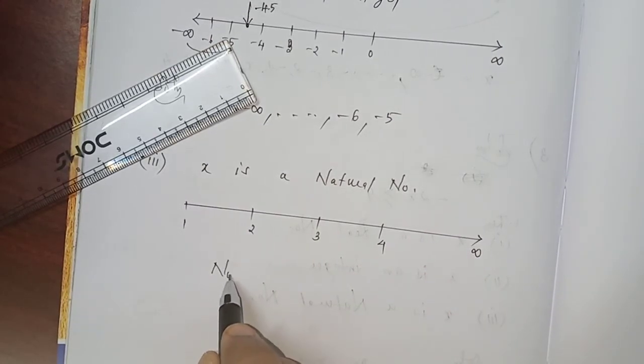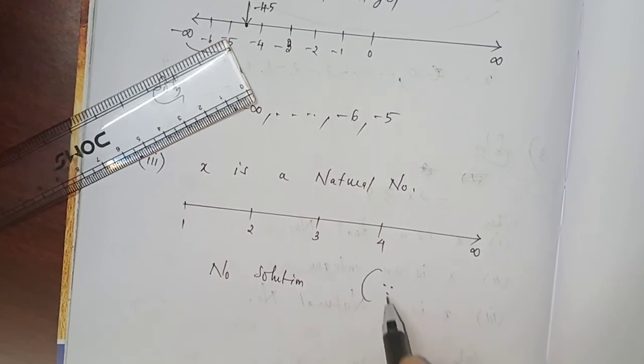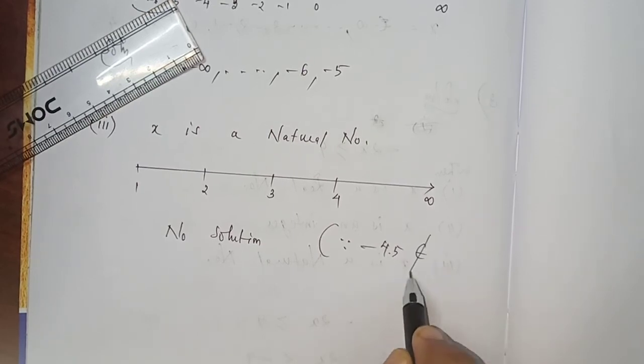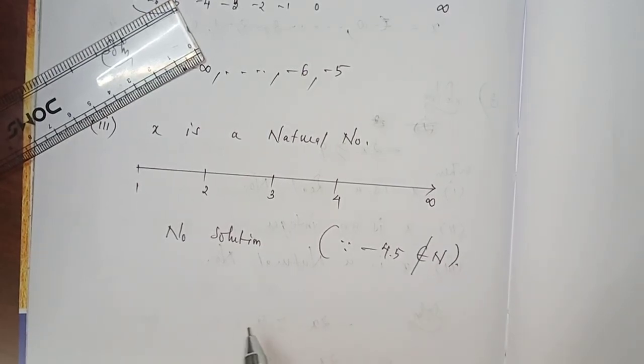Therefore, you can straight away write no solution. Since, you can write -4.5 doesn't belong to that natural number. That's all. Problem number 3 is completed.